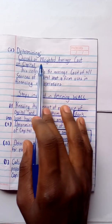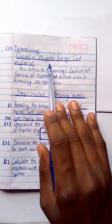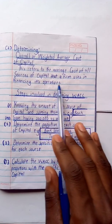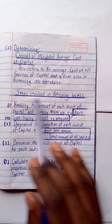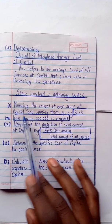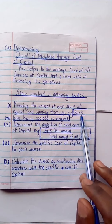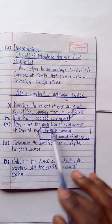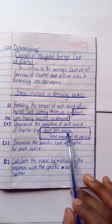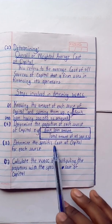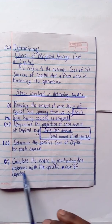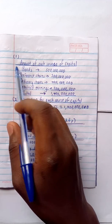The second part of the question requires the weighted average cost of capital (WACC). This refers to the overall cost of all sources of capital that a firm uses in financing its operations. The steps are: first, determine the amount of each source and sum them; second, determine the proportion of each source (amount ÷ total); third, determine the specific cost of each source; fourth, multiply proportions by specific costs and sum to get WACC.